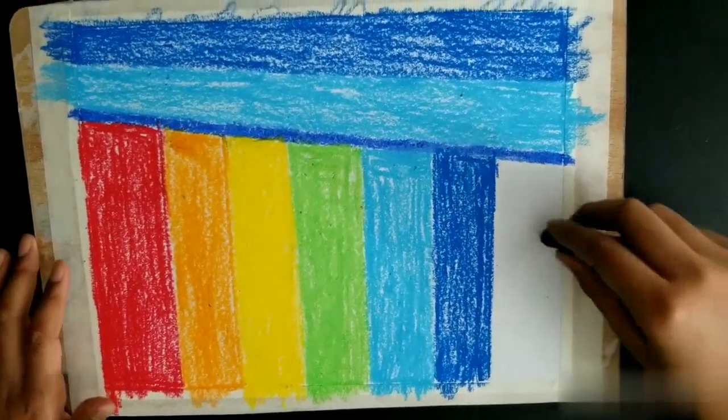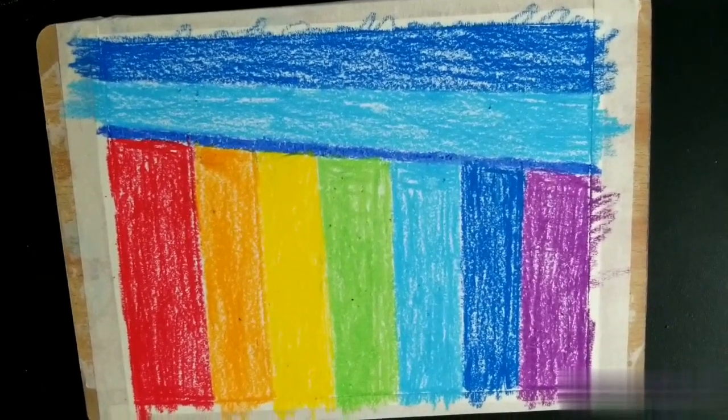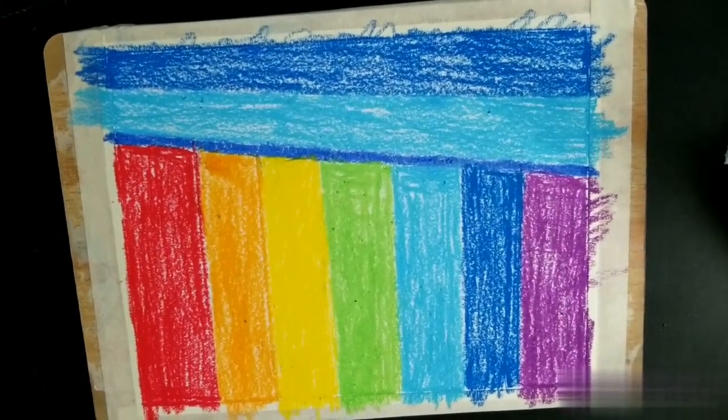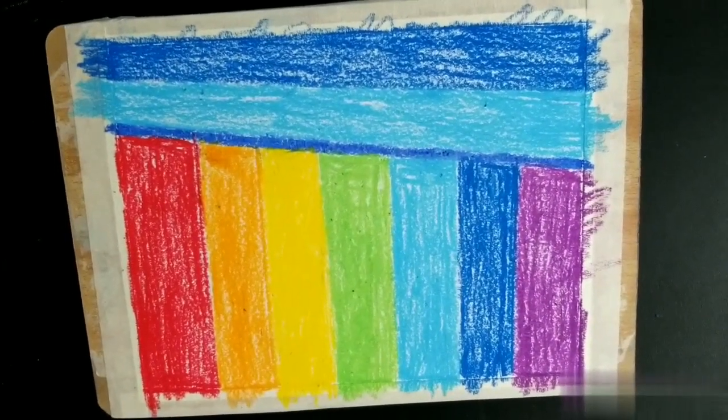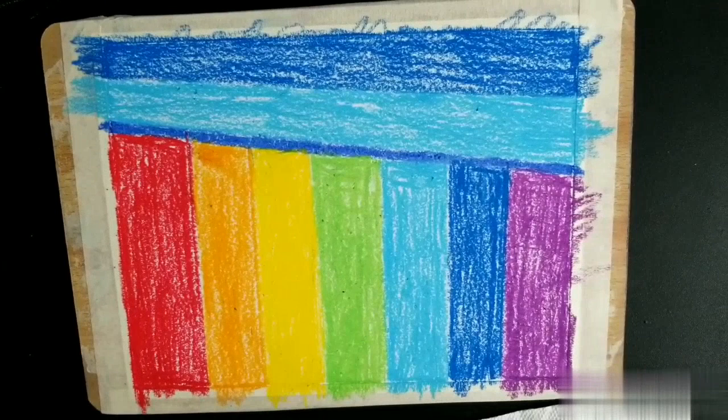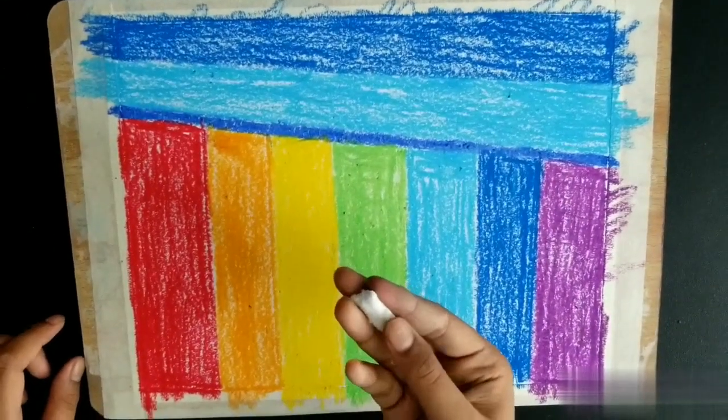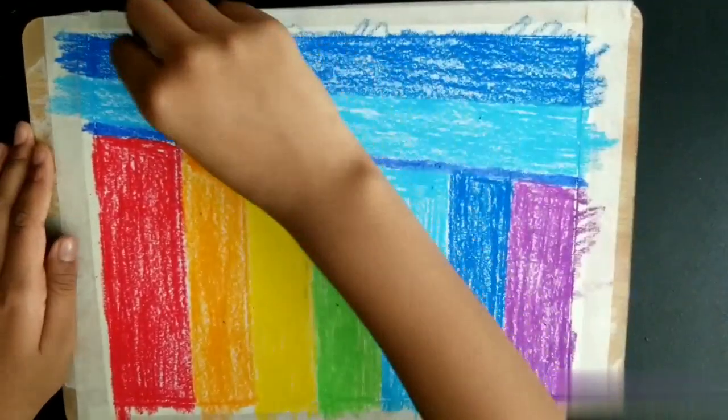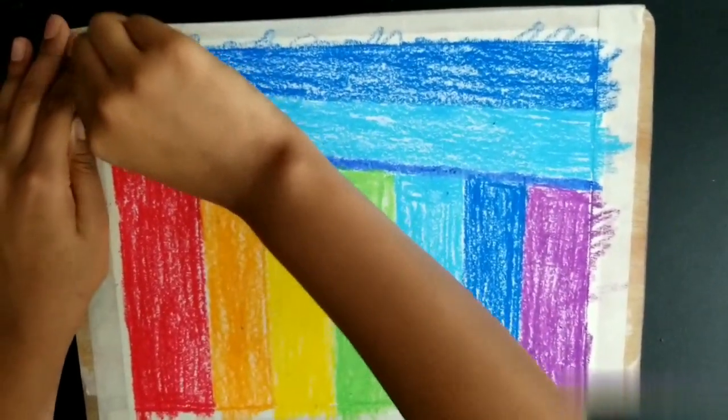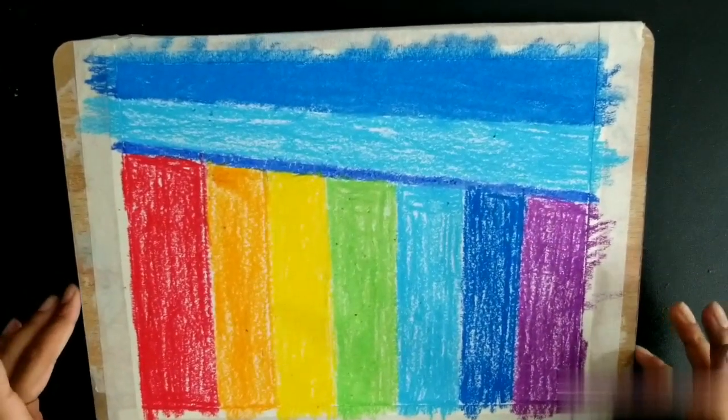Fill the rest with purple. After you color it in, now we need our tissues and we're going to rub it. So I got a piece of tissue and I'm going to rub the top, smooth all the colors like this.